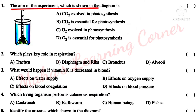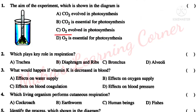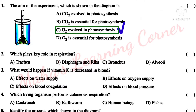First question: the aim of the experiment which is shown in the diagram is — Option A: CO2 evolved in photosynthesis. Option B: CO2 is essential for photosynthesis. Option C: O2 evolved in photosynthesis. Option D: O2 is essential for photosynthesis. Correct answer: Option C — O2 evolved in photosynthesis.